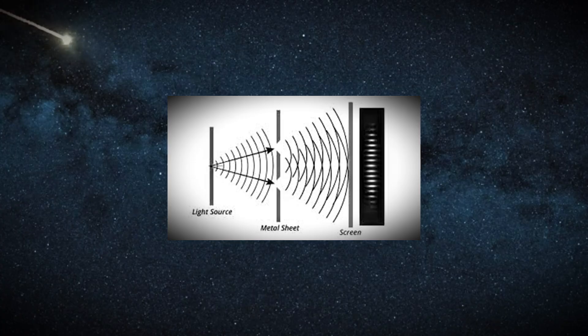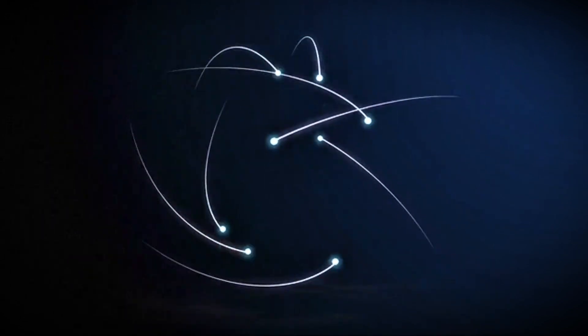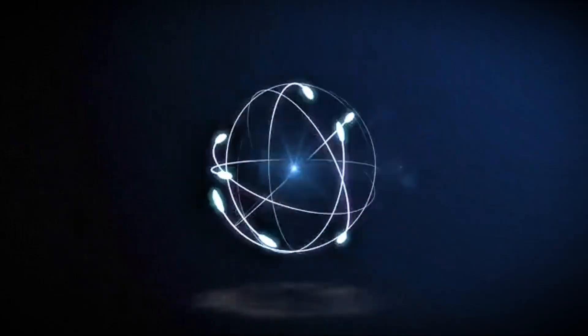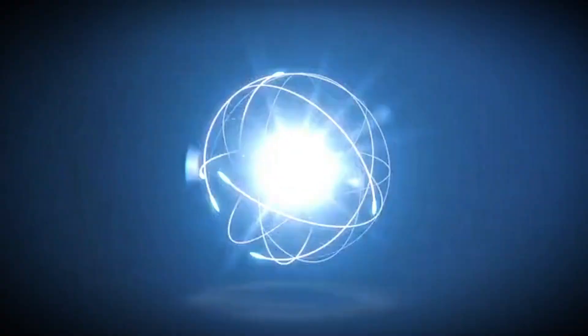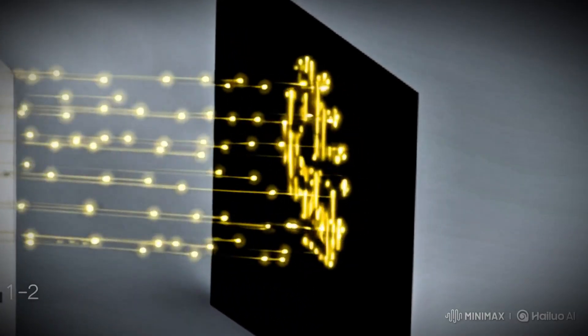Later, the double-slit experiment revealed even deeper mysteries. In the 20th century, scientists found that even single photons or electrons sent one at a time could build up the same interference pattern. This meant particles behaved like waves too, a discovery that led to the strange world of quantum mechanics and the concept of wave-particle duality.